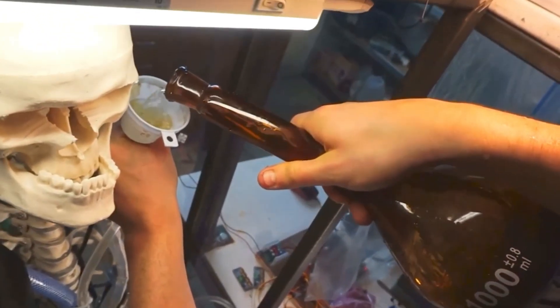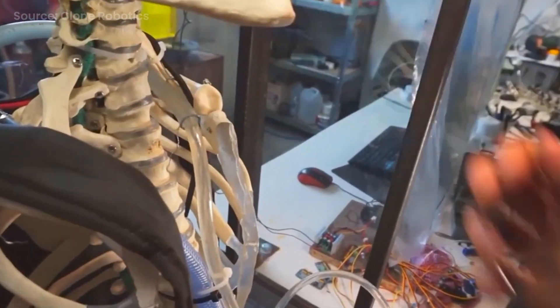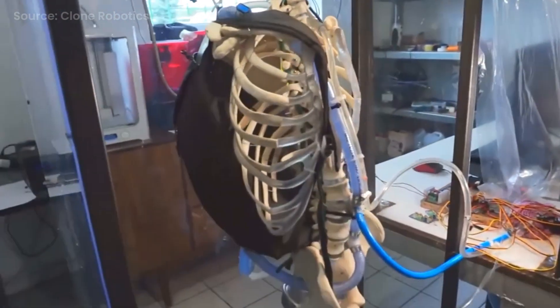The way this works is a hydraulic pump circulates water through the robot's vascular system, which creates pressure and causes the artificial muscles to contract like human ones.